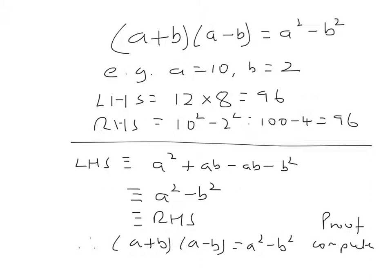Now this is how you prove things. Notice that these symbols here are not equal signs — they're equivalence signs. The left hand side is always going to be equal to that; it's going to be equivalent to that. So these are equivalence signs, and it's the equivalence signs that you use in a proof. Let's explore this more on the next page.